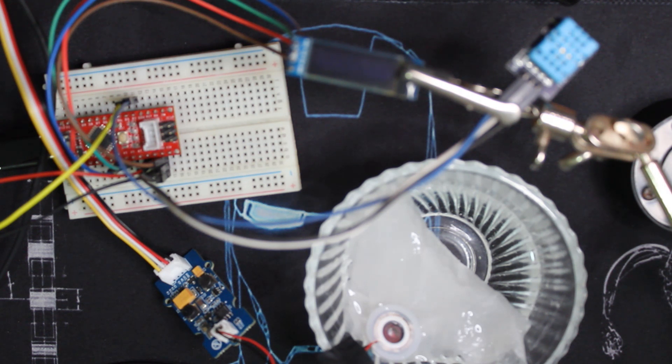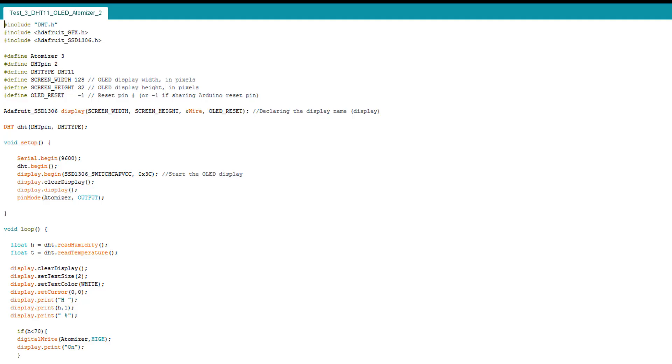We have a DHT11 which is a humidity and temperature sensor. It detects the current humidity of this room. If it's below our set point, the atomizer starts working and starts humidifying our room. It's very simple—the level you set it from the code, as I can show you right now.